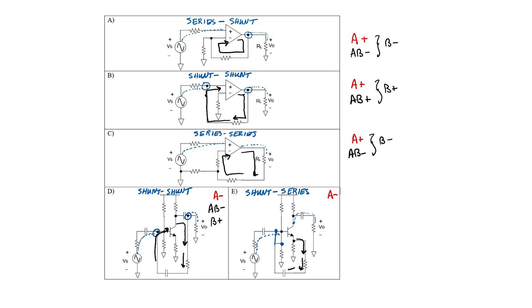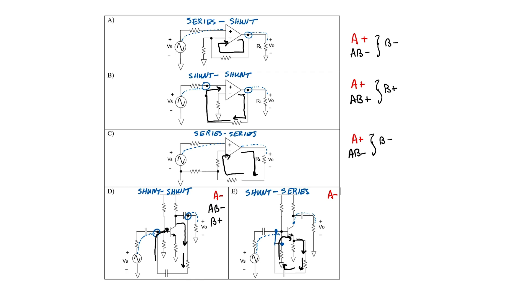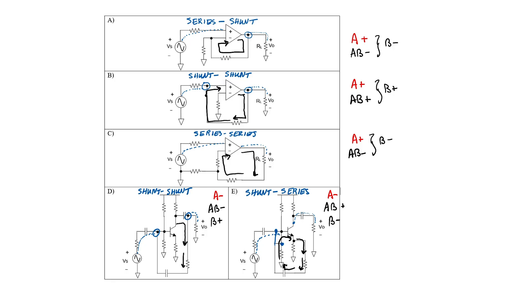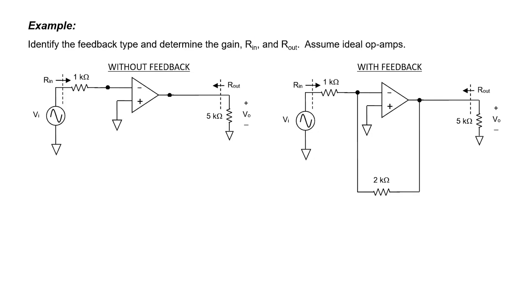In configuration E, a signal running around the loop doesn't see a common-emitter configuration; rather it sees a common-collector configuration. This is a non-inverting amplifier from the perspective of a signal in that loop, therefore A·beta is a positive number and I can infer that beta would be negative. It's quite common that we can look at a circuit and immediately see by inspection both the type of feedback and the signs of both A and beta. Let's look at a couple of examples now.